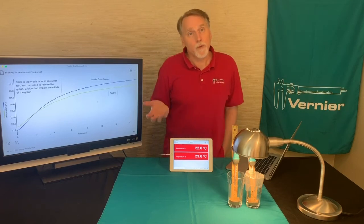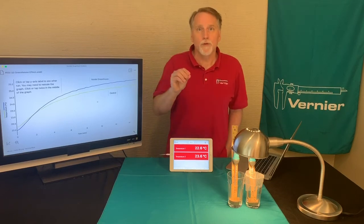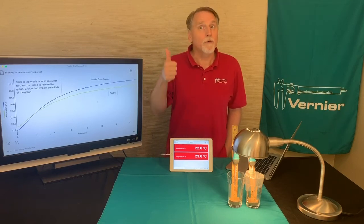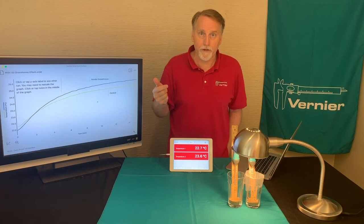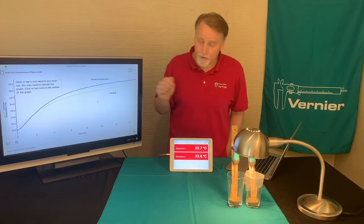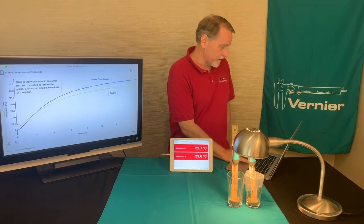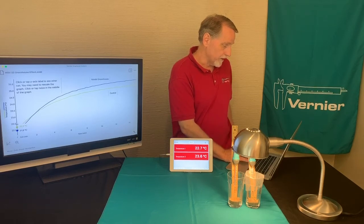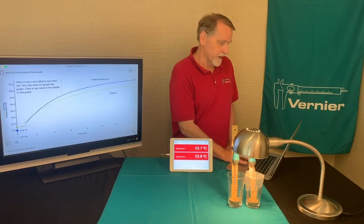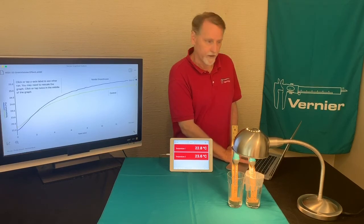The experiment wants you to get those initial temperatures and those final temperatures. To do this, you can use the graphical analysis app. One way is to click on the very beginning and get those values there, or click on the very end to get the final values.